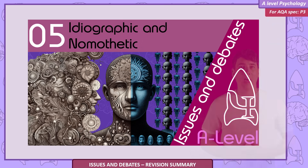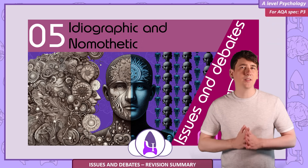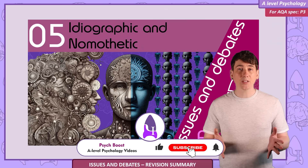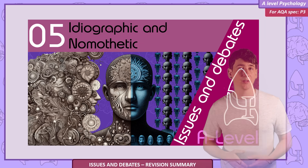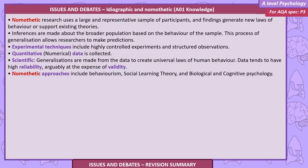Ideographic and nomothetic. Nomothetic research uses a large and representative sample of participants, and findings generate new laws of behaviour or support existing theories. Inferences are made about the broader population based on the behaviour of the sample, and this process of generalisation allows researchers to make predictions. Experimental techniques include highly controlled experiments and structured observations.